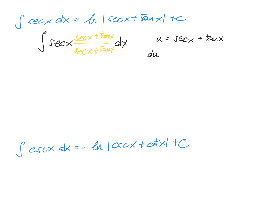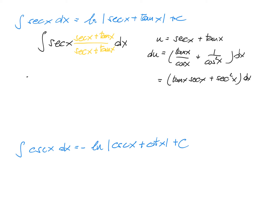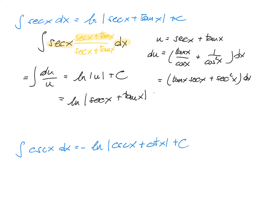We calculate the derivative: du is tangent of x divided by cosine of x plus 1 divided by cosine squared of x times dx, which equals tangent x times secant x plus secant squared of x dx. Looking at the integral, the numerator is secant squared plus tangent times secant — this entire part equals du. In the denominator we have secant plus tangent, so that is just u. We get ln of absolute value of u plus a constant, then replace u: secant of x plus tangent of x plus a constant.